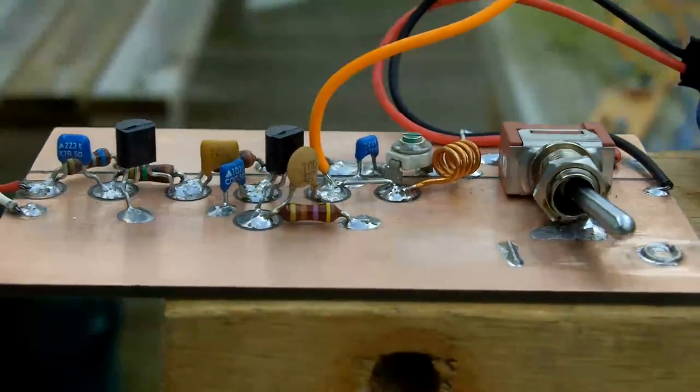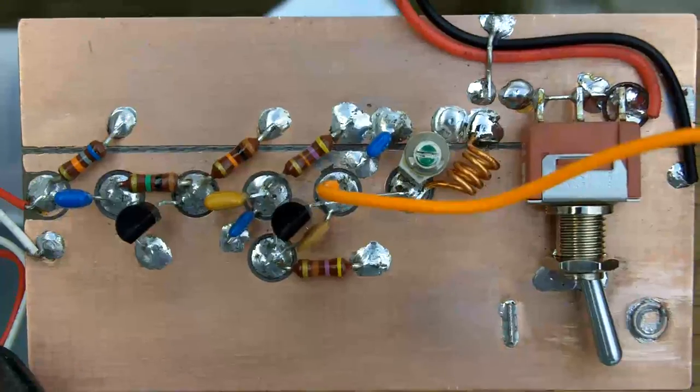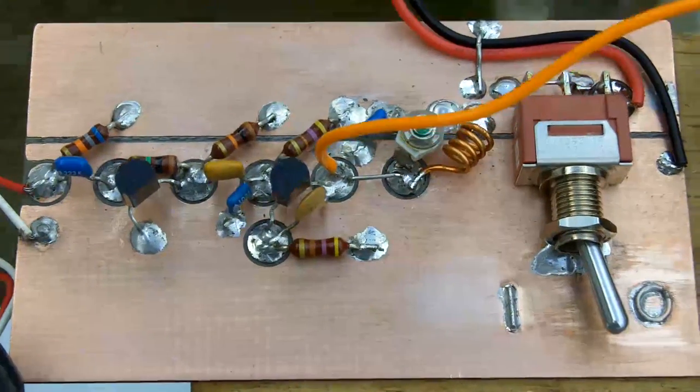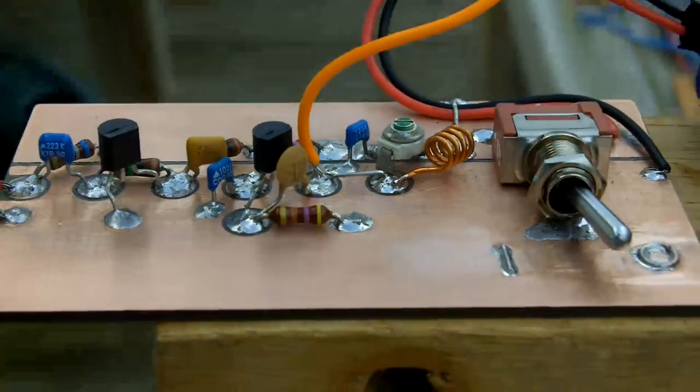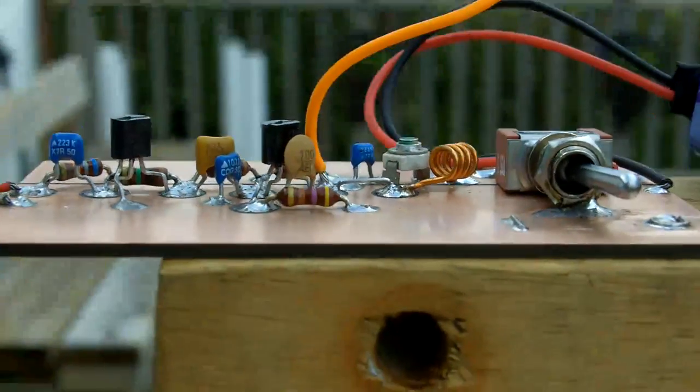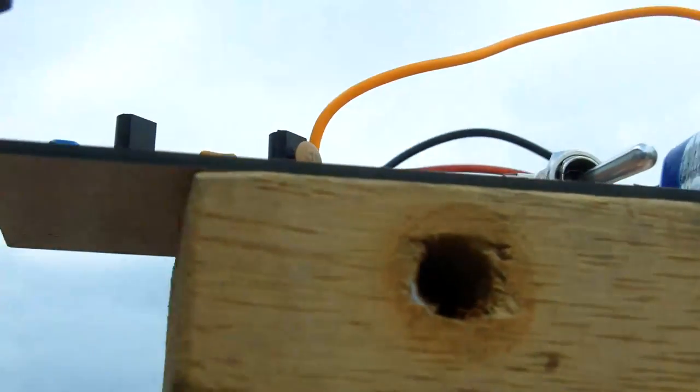This is the finished transmitter. I could have made it a lot smaller, but I simply don't need it to be any smaller. There are no holes drilled in the printed circuit board. Everything is mounted on the top surface.